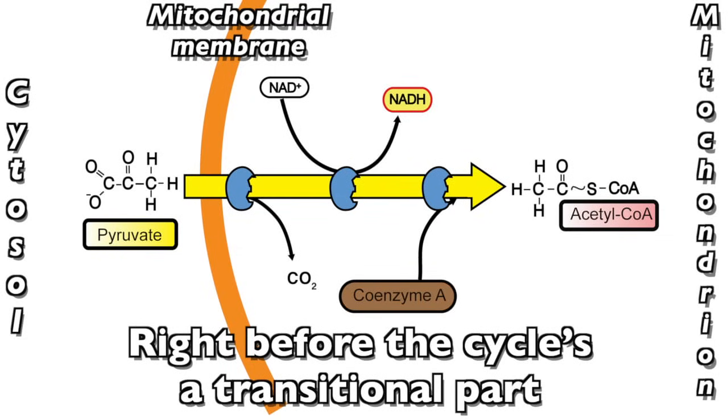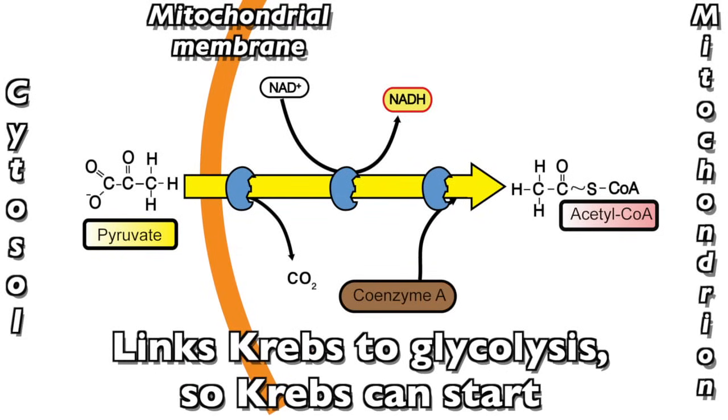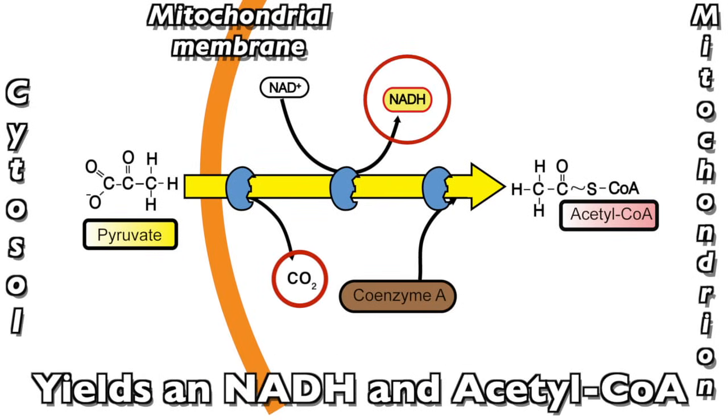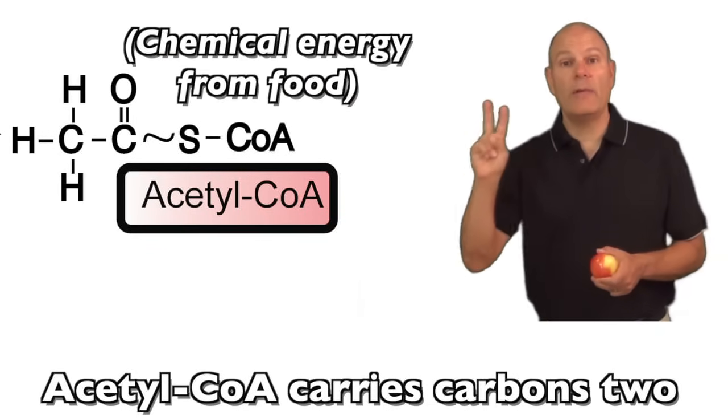Right before the cycle's a transitional part, links Krebs to glycolysis so Krebs can start. Enzymes take a CO2 off pyruvate, yields an NADH and acetyl-CoA.